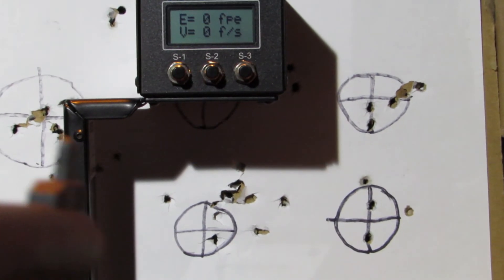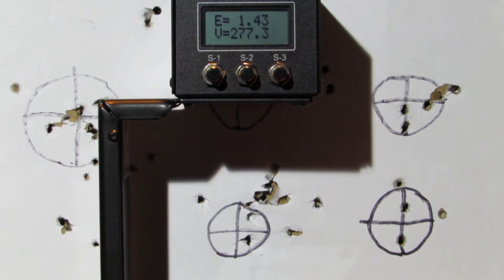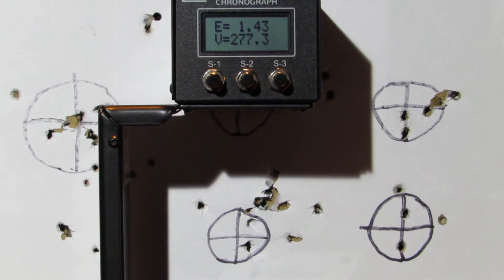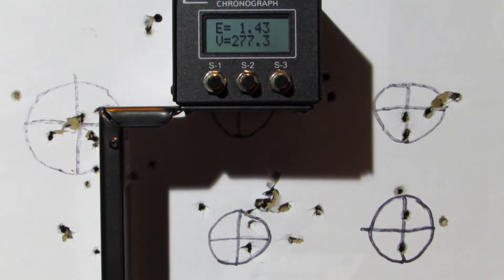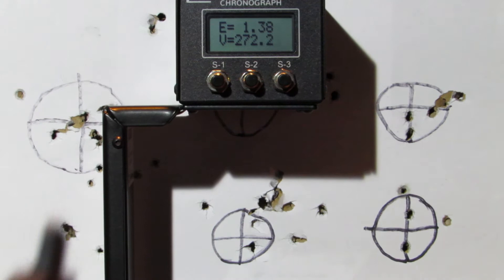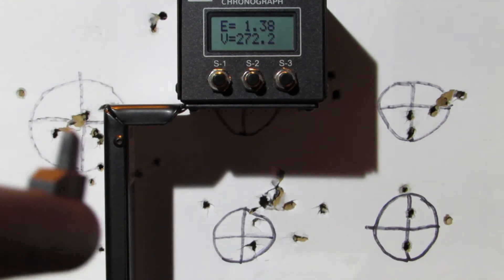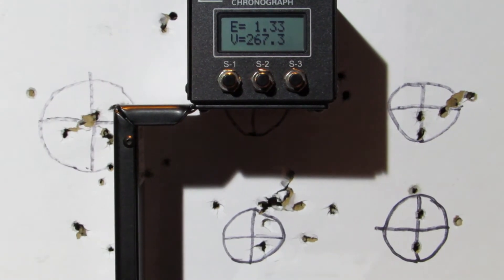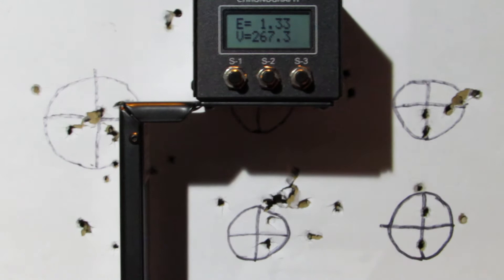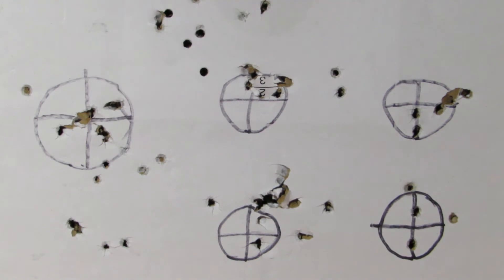Okay, first shot. Okay, the average foot poundage was 1.38 foot pounds, with an 8.4 grain pellet.